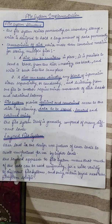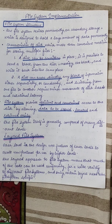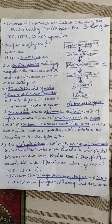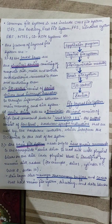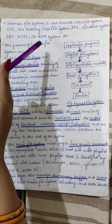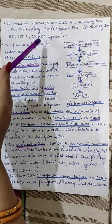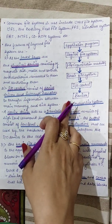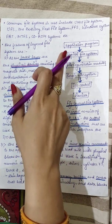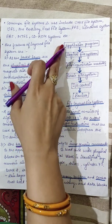Before going to the diagram, we note that common file systems include the Unix File System (UFS), Berkeley's Fast File System (FFS), the Windows file systems FAT and NTFS, and CD-ROM systems. This diagram depicts the layered file system — different layers arranged in the layered file system implementation.